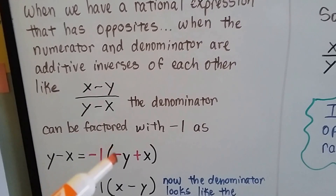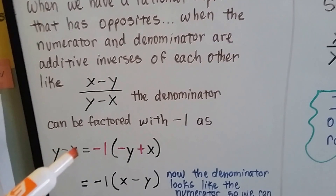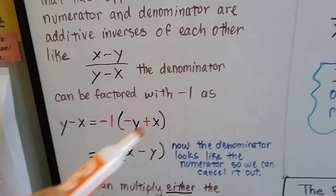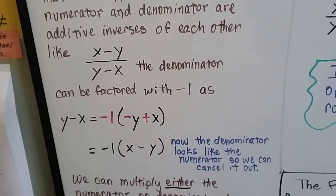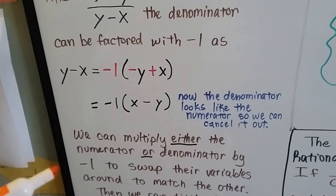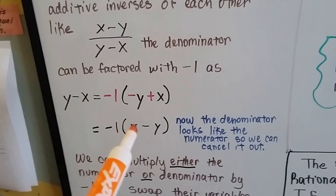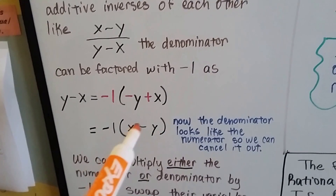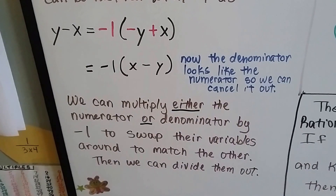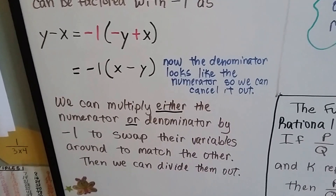We can do negative 1 times negative y plus x. This was a positive y and then minus x. We do negative y plus x, and if we multiply this times negative 1, it's going to equal this. By multiplying it by negative 1, this has an x minus y, just like the numerator, so we can cancel it out. We can multiply either the numerator or denominator by that negative 1 to swap the variables around and match the other one, then we can divide them out.